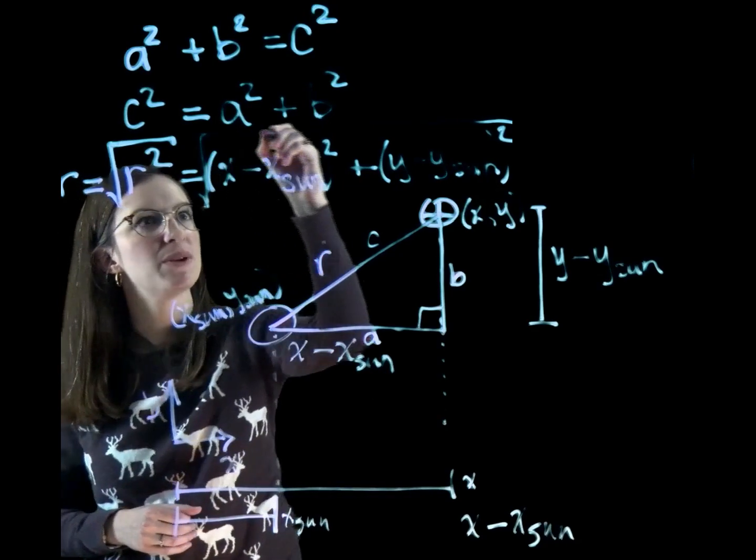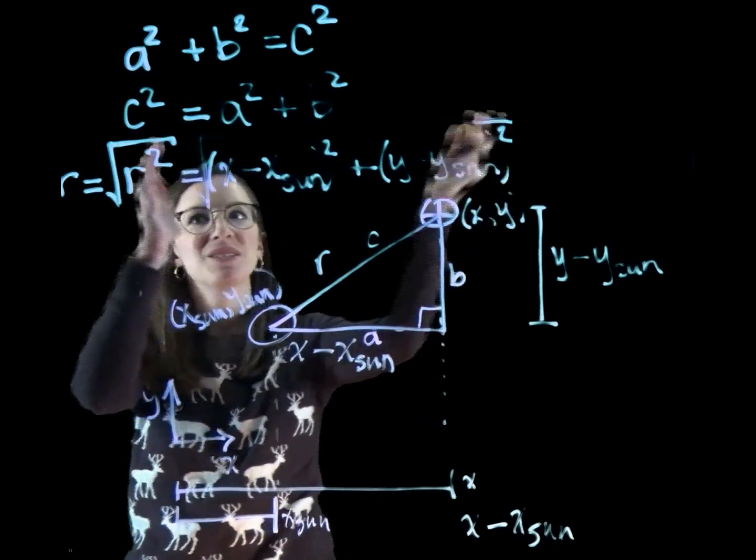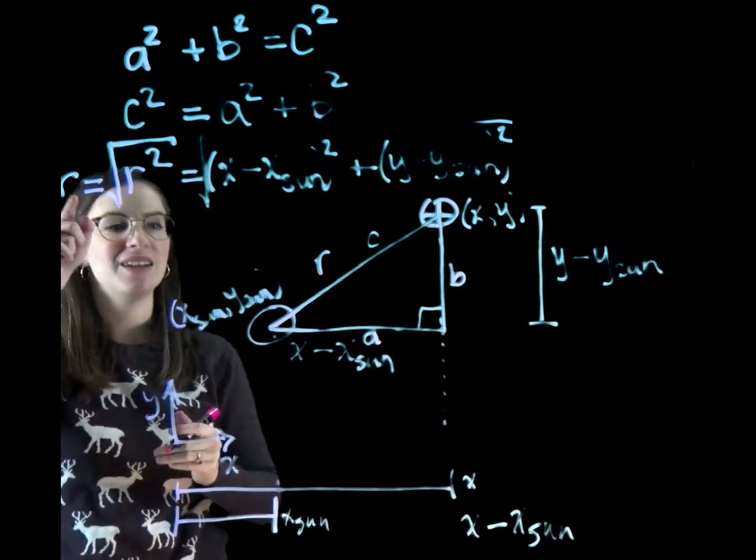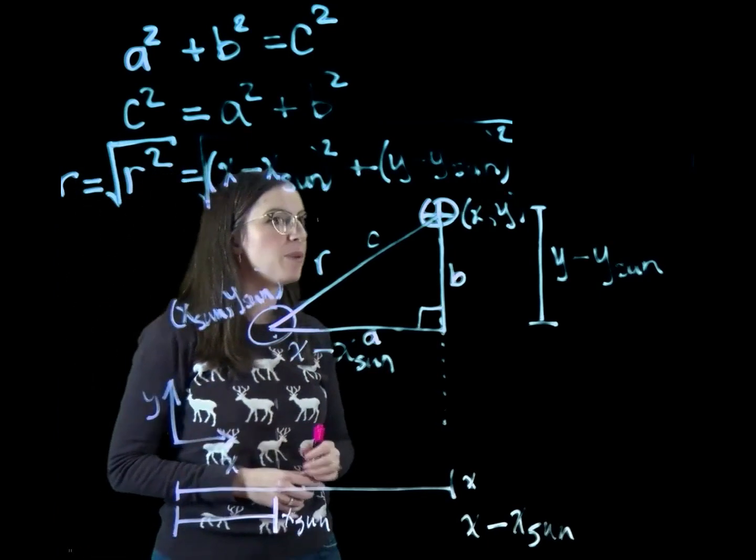It's really hard to see, but I promise you there is a square root sign there. So all of this is in a square root sign, and that gives us r. So now we have the distance to our two objects. So let's go back to our code.